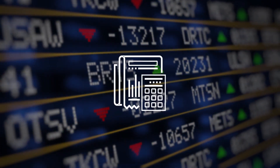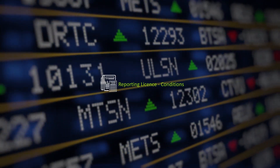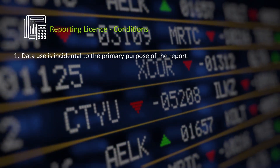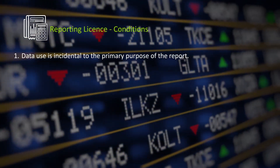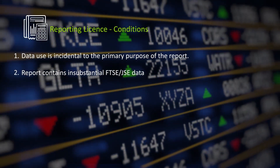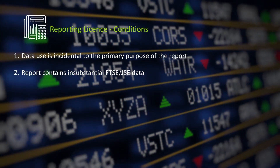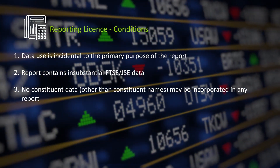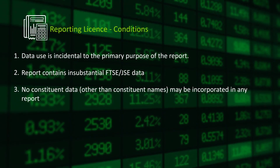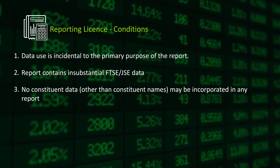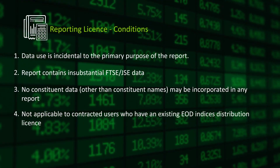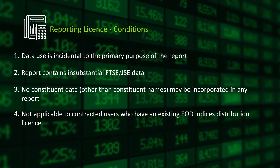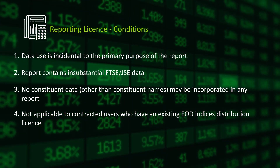Reporting License Conditions: Data use is incidental to the primary purpose of the report. The report contains insubstantial FTSE JSE data. No constituent data other than constituent names may be incorporated in any report. This is not applicable to contracted users who have an existing end of day indices distribution license.